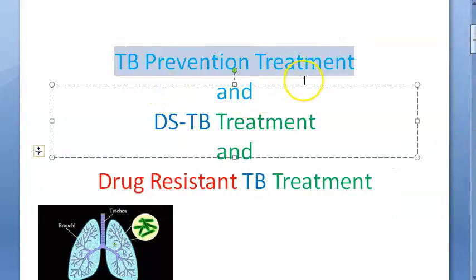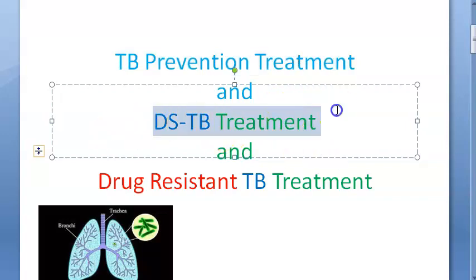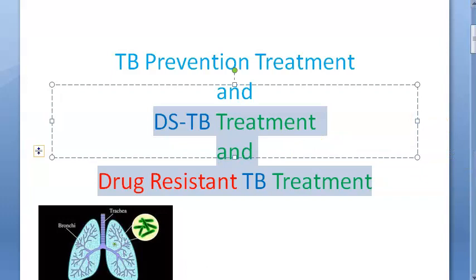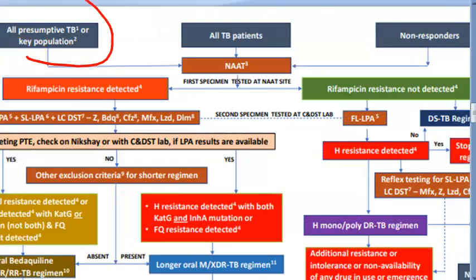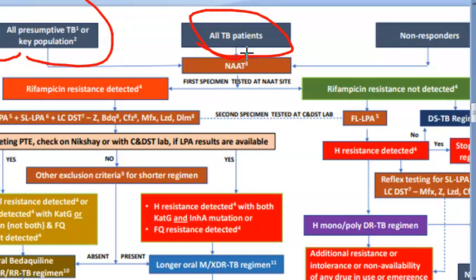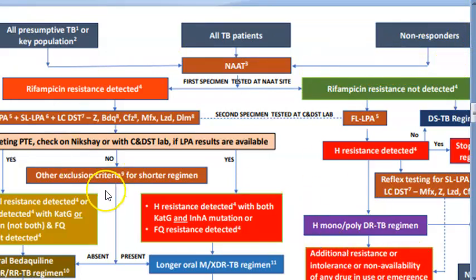Now let's look at the algorithm to treat a person who has tuberculosis. On top of the algorithm: all presumptive TB or key populations — anyone exposed to TB, HIV patients, etc. — are considered presumptive TB and need to be checked. All confirmed TB patients, and patients on TB treatment who are not responding, are included. In all these people, they perform NAAT — nucleic acid amplification test.